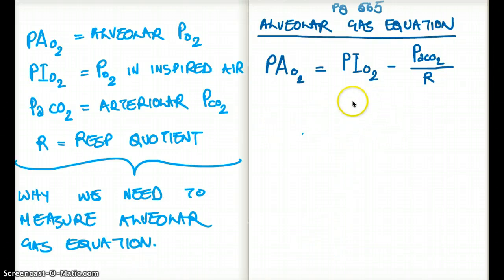Now oftentimes, we just know the PiO2. The PiO2 is going to be 150 in general, and the R value is going to be 0.8. So you might end up using the equation like this.